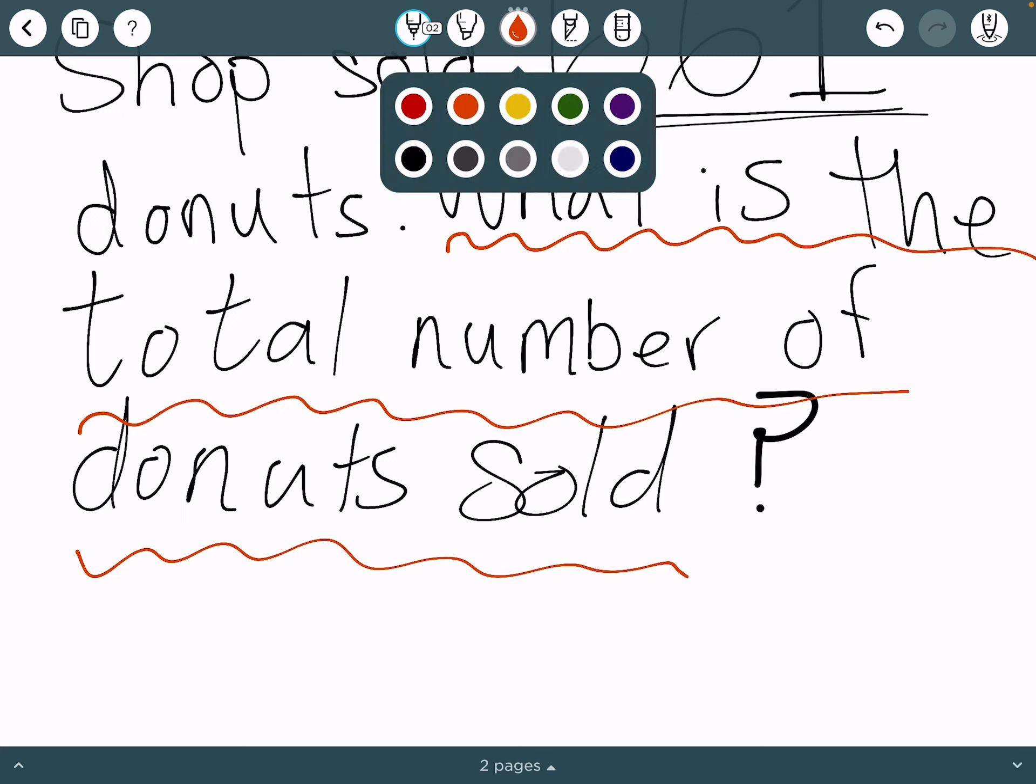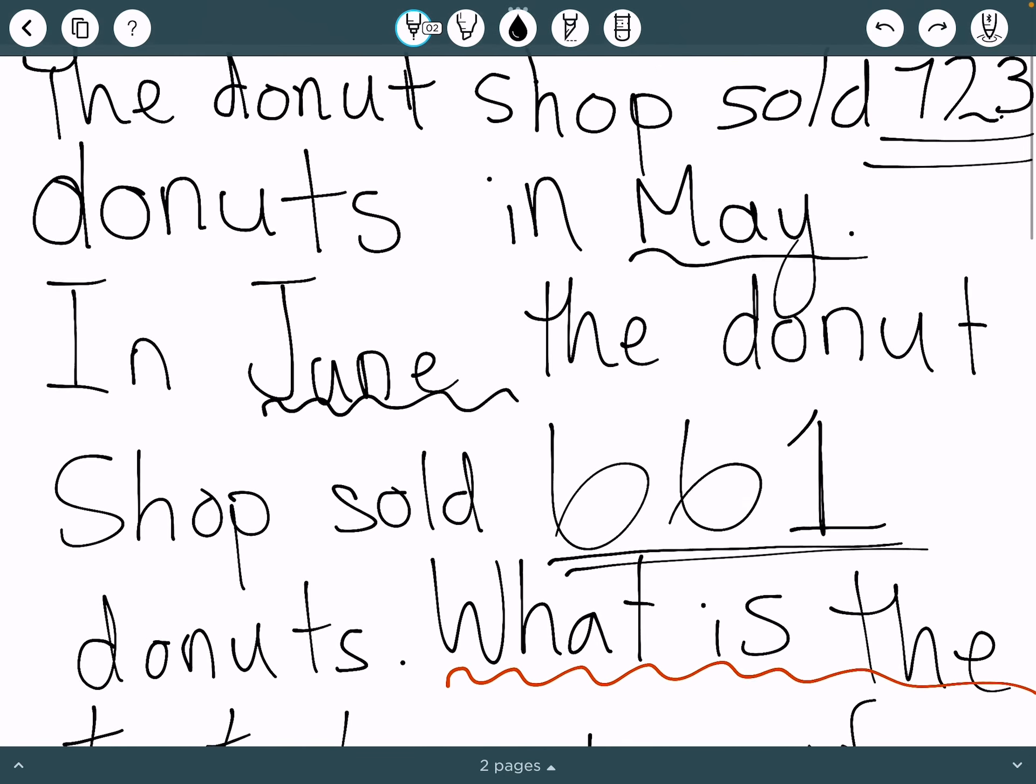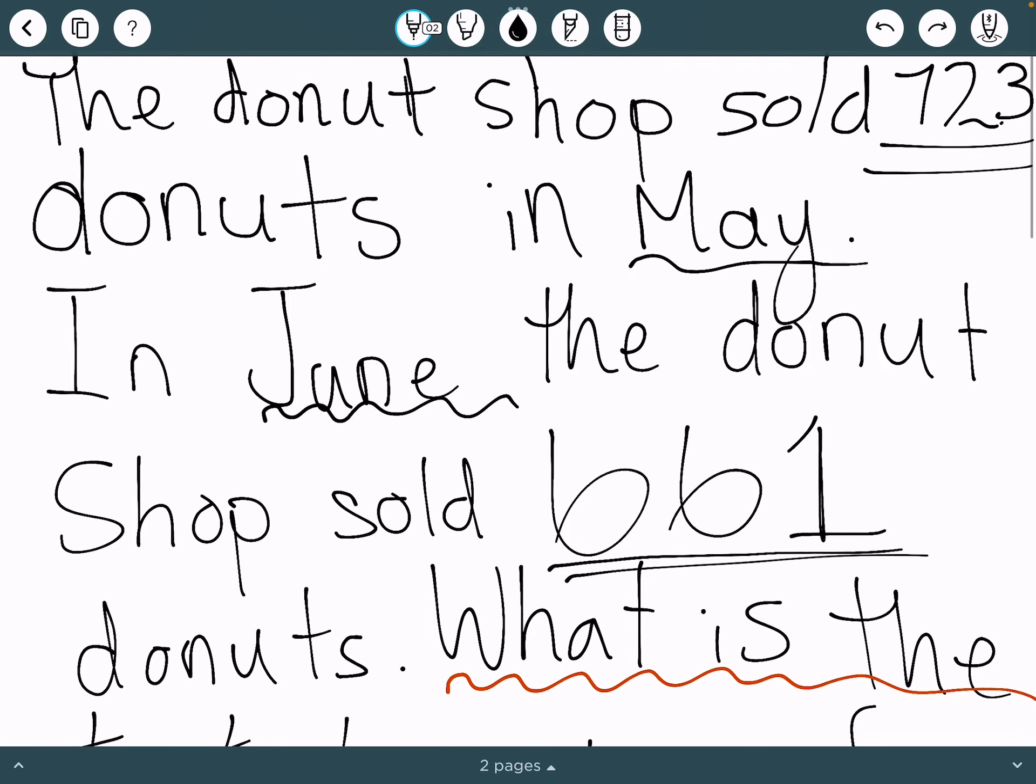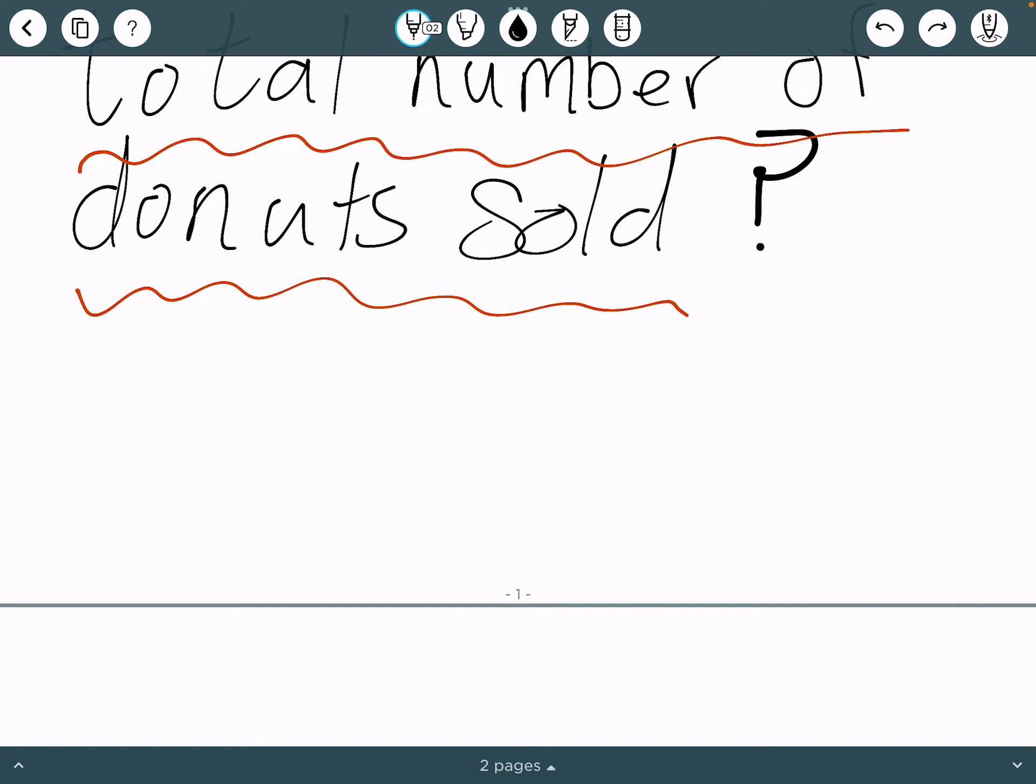To solve this, we could put 661 plus 723 or 723 plus 661, which would be addition. So first, we need to put this.